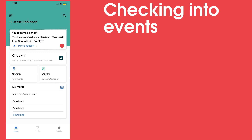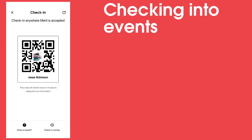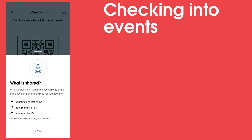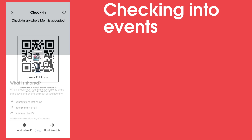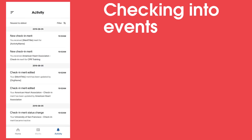You can use your Merit member app to check into an event or activity that has a Check-in with Merits kiosk set up. To do this, select Check-in from the main screen. This will pull up a QR code linked to your Merit profile. You can scan this at the Check-in kiosk to check yourself in. When you check in, your Merit key will share your name, primary email, and Merit member ID. Select Check-in activity to see the history of which events you have checked into.